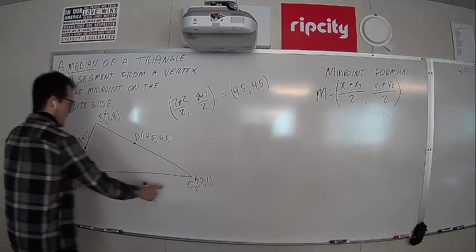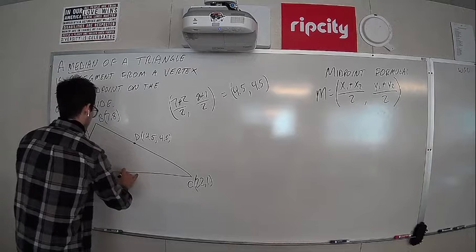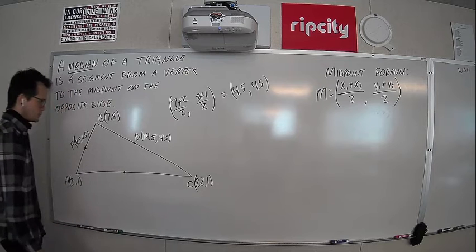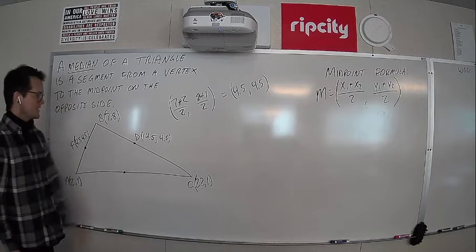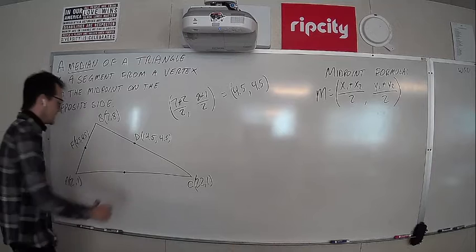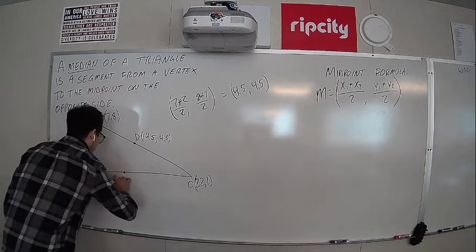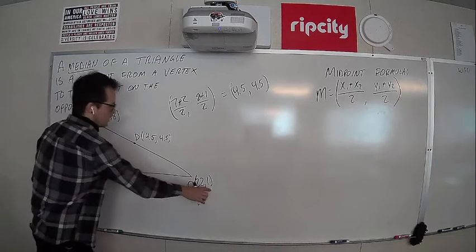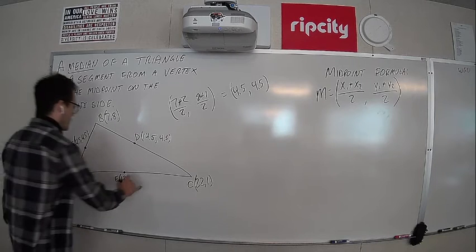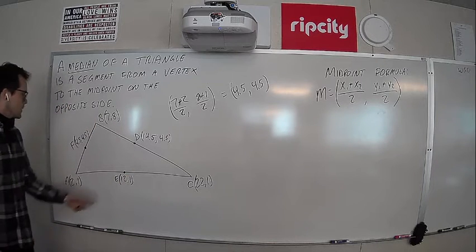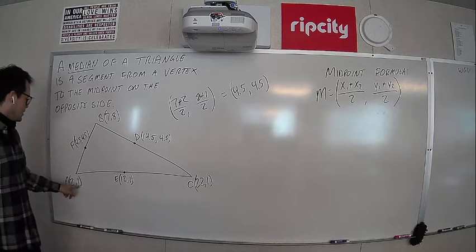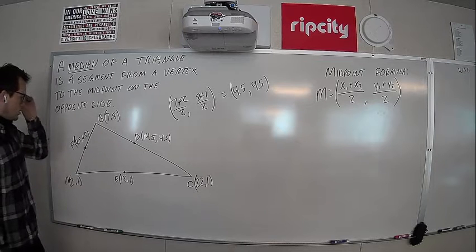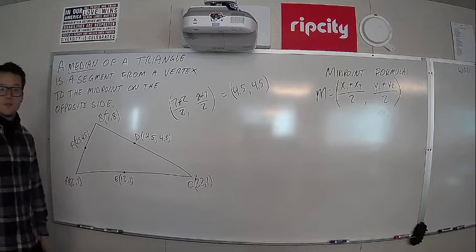And our last one, the middle of a, c, it's going to be here-ish, but we need to find the coordinates. Average of the two x-coordinates, 2 plus 22 is 24. Half of that is 12. So this one I'm going to call point e, x-coordinate of 12. And then the y-coordinate, 1 plus 1 is 2. Half of that is 1. So that makes sense of the y-coordinates, the same here, because these two points are the same height, a and c. They're on a horizontal line, so the midpoint must be on that same horizontal line. Okay, we've found our three midpoints of all three sides.